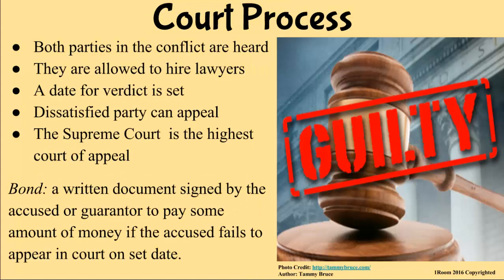The suspect may be released on bond as the case continues. A bond is a written document signed by the accused or a guarantor to pay a certain amount of money in the event that the accused fails to appear in court on the set date. Both parties are then heard and their evidence considered. They are allowed to hire lawyers to represent them — a prosecuting lawyer works with the complainant, while the defense lawyer is hired by the accused or the defendant. After all has been considered by the judge, a date is set for the verdict. If found guilty as charged, the accused pays for his crimes or can appeal in a higher court.